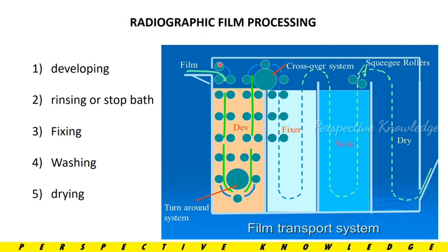Radiographic film processing involves five steps: Film Developing, Rinsing, Fixing, Washing, and Drying. Modern systems now digitalize the output directly via scanning. The main processing sequence is: Develop, Rinse or Stop Bath, Fix, Wash, and then Dry to get the final output.